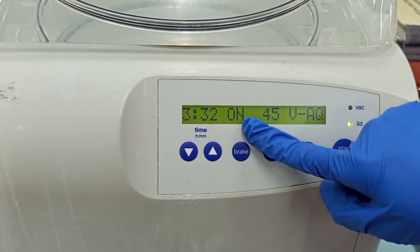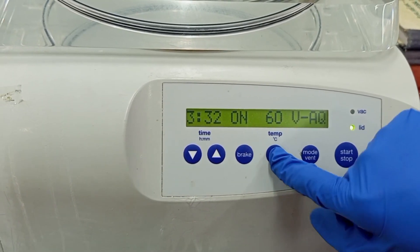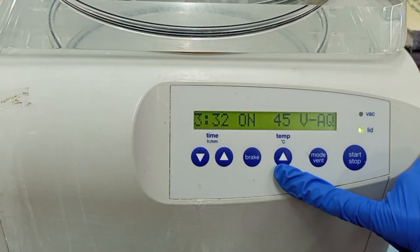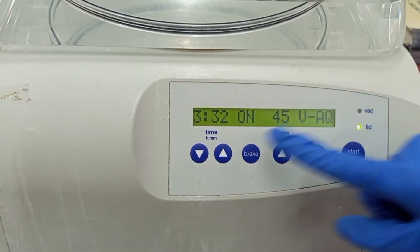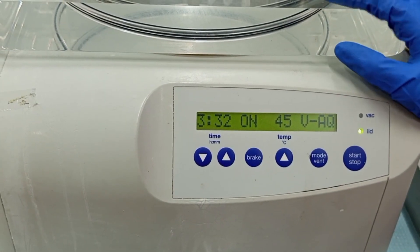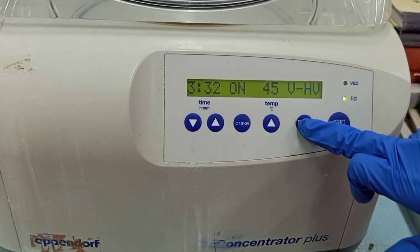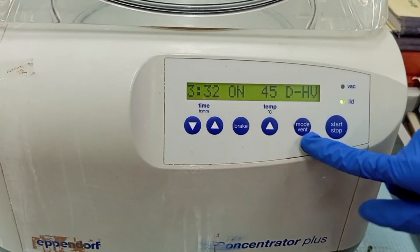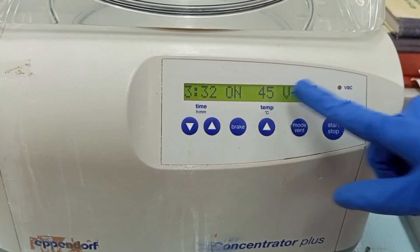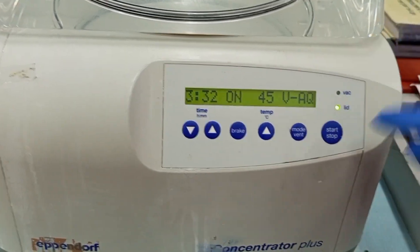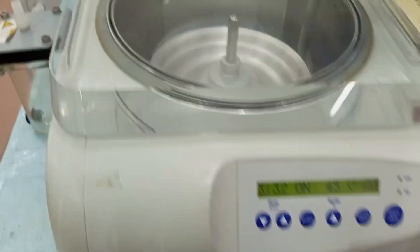Now for the temperature, you have 45 degree, 30 degree, 60 degree, and room temperature options. Here the two lines show room temperature. Different modes are available depending on your sample. You can change the mode. For instance, I keep it here at VAQ mode. Now press the start button.